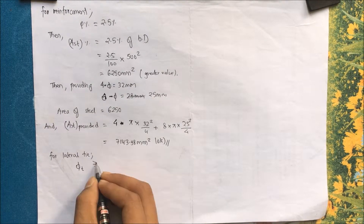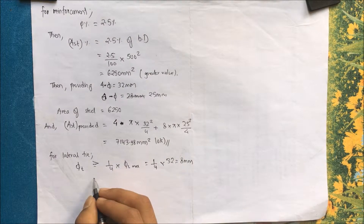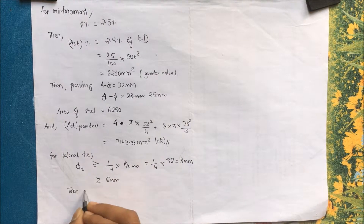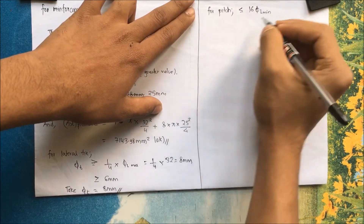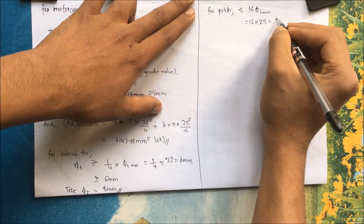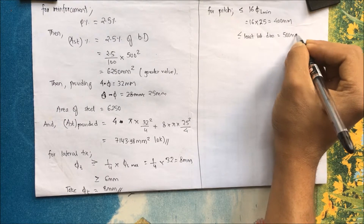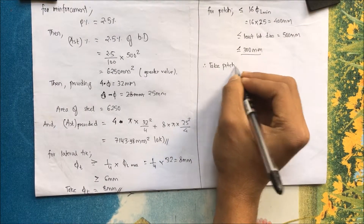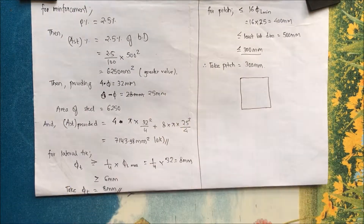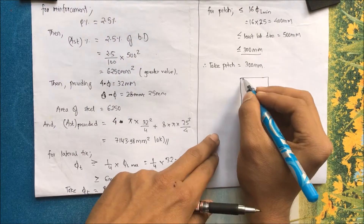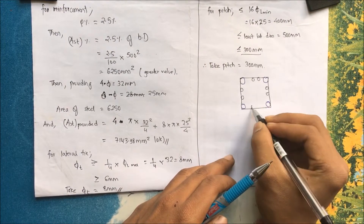For lateral ties: diameter φt ≥ (1/4) × φl_max = (1/4) × 32 = 8 mm ≥ 6 mm. Provide φt = 8 mm. Pitch should be ≤ 16 × φl_min = 16 × 25 = 400 mm, ≤ least lateral dimension = 500 mm, and ≤ 300 mm. Taking the least value, pitch = 300 mm. Detailing shows 4 corner bars of 32 mm and 8 bars of 25 mm at mid-faces with 50 mm cover.